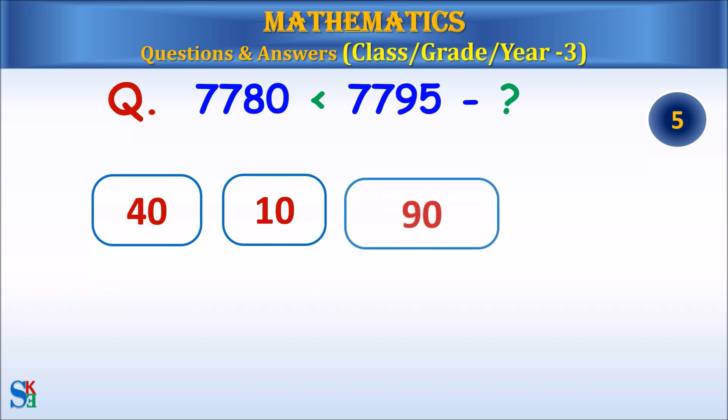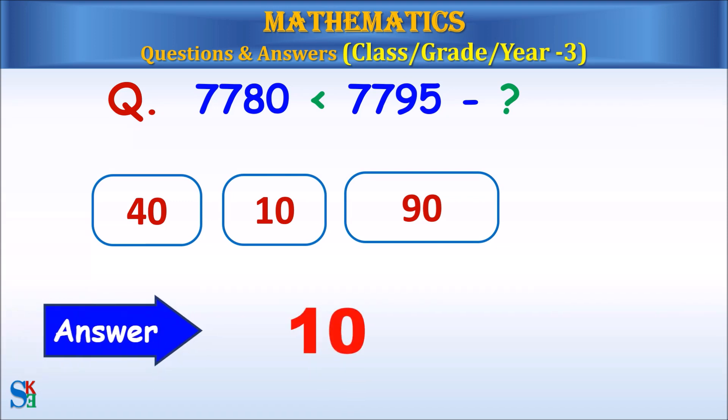7780 is smaller than 7795 minus what? Answer: 10.